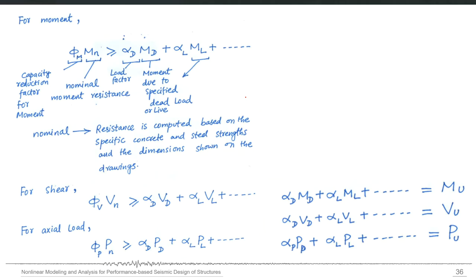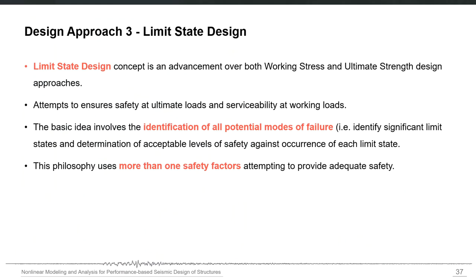A new concept in ultimate strength design is that we can have different factors of safety for load effects coming from different kinds of loads, depending on how confident we are in estimating those loads. For example, a separate load factor for dead load moment and a separate factor for live load moment, and also different factors for different actions — moment, shear, or axial load. These factors were derived and incorporated into building codes, and we use them to compute amplified load effects to compare with capacity.